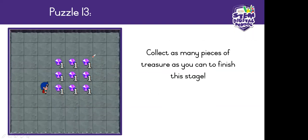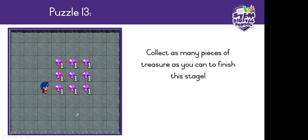The next puzzle says: collect as many pieces of treasure as you can to finish this stage. You can have nine diamonds that you can collect. You can go any way that you want to. If you want to go this path, you can. There are many different patterns that you can use — you could even start at the top and go all the way down. It doesn't matter if all of our code looks different, as long as we get the treasure and we do what our instructions tell us to do.